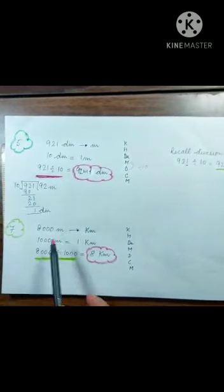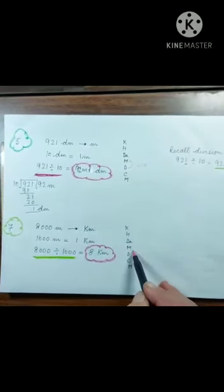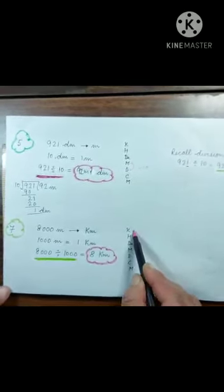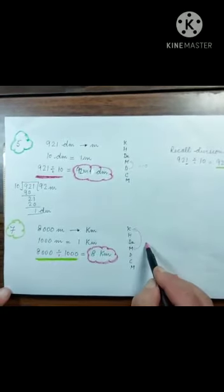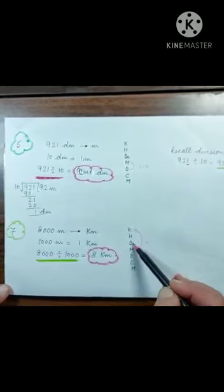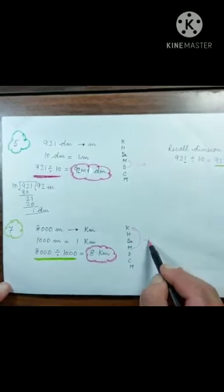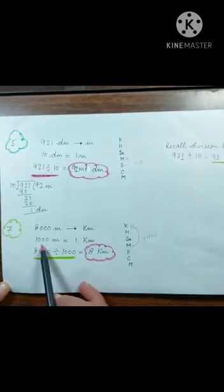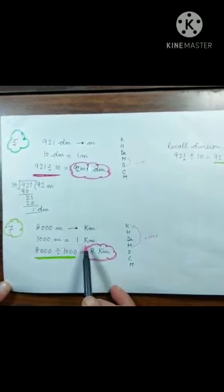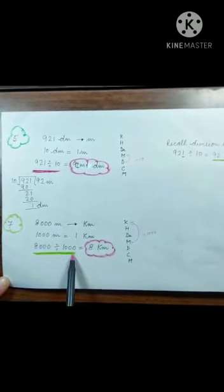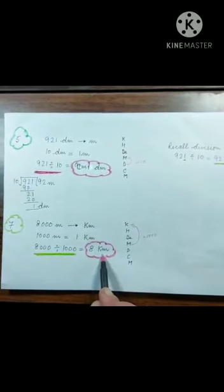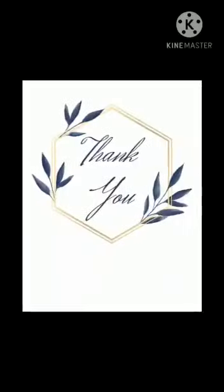8000 meters — convert to kilometers. Meters going to kilometers — smaller to bigger, three steps up, divide by 1000. One thousand meters equals one kilometer. 8000 divided by 1000 equals 8 kilometers. Students, watch this video carefully to understand the concept properly. If you understand it, the next activities will be easy to do. Thank you.